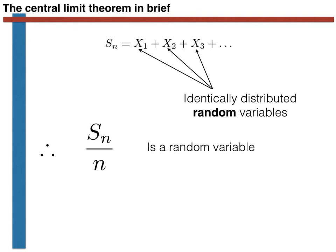We learnt, when we looked at the law of large numbers, that if we generate an infinite number of random variables, Sn over n is no longer random. In that case, Sn over n is equal to the expectation of the random variable with certainty. The law of large numbers told us that the probability of the modulus of the difference between Sn over n and the expectation being greater than epsilon was equal to 0, and thus we could say with certainty that Sn over n is equal to the expectation in the limit as n tended to infinity.